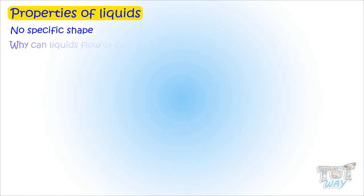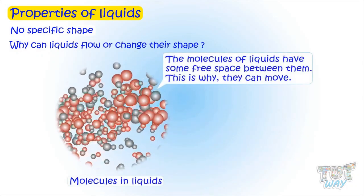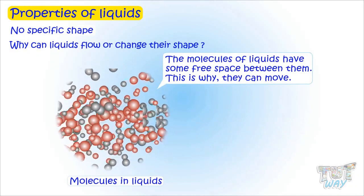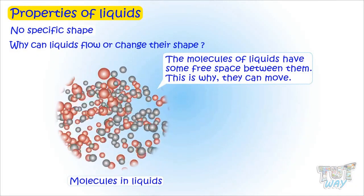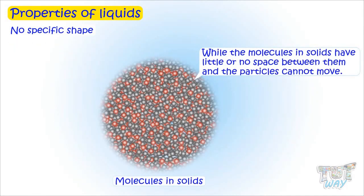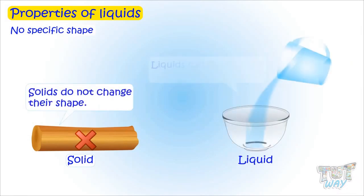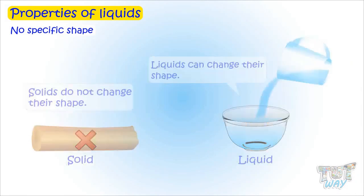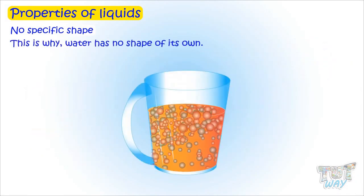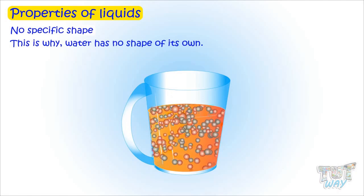Why can liquids flow or change their shape? The molecules of liquids have some free space between them, so they can move — that is why liquids can flow. Opposite to solids, the molecules in solids have little or no space between them and cannot move, so solids do not change their shape. This is why water or any liquid has no shape of its own — they just take on the shape of the container.